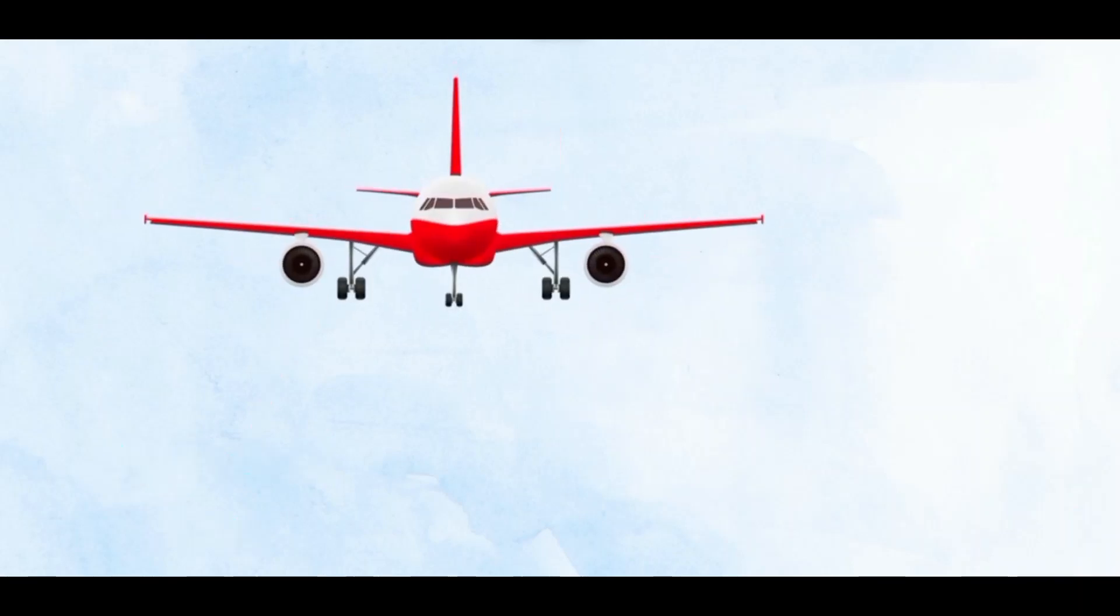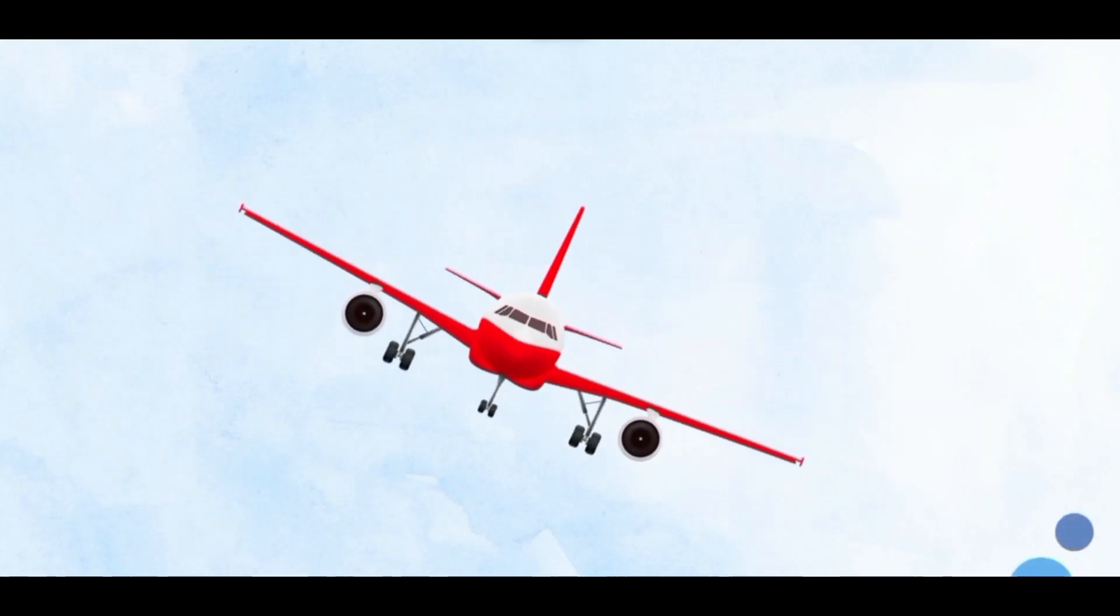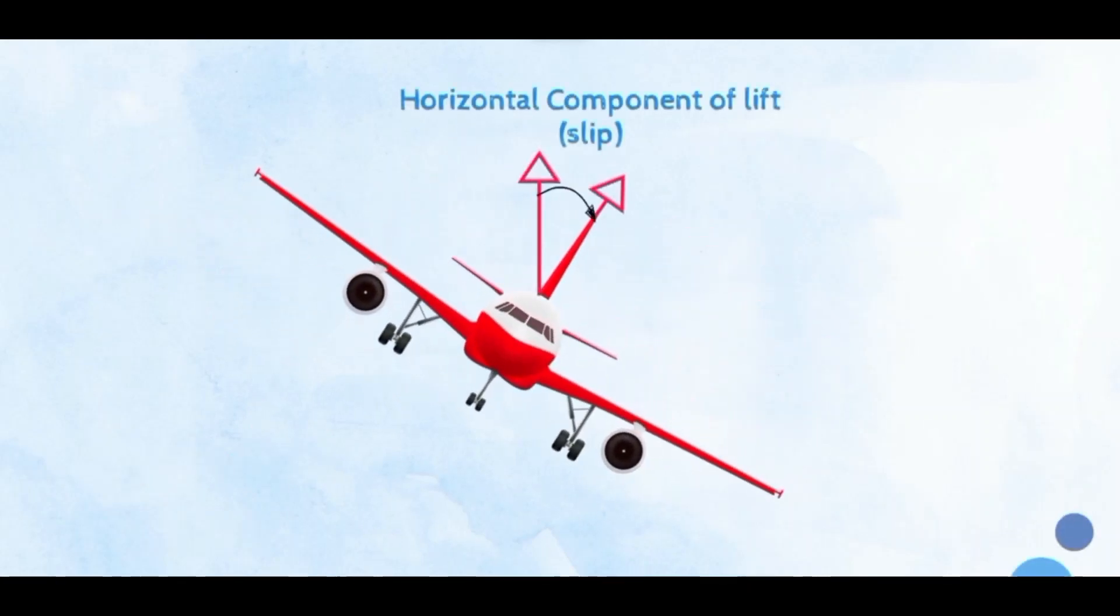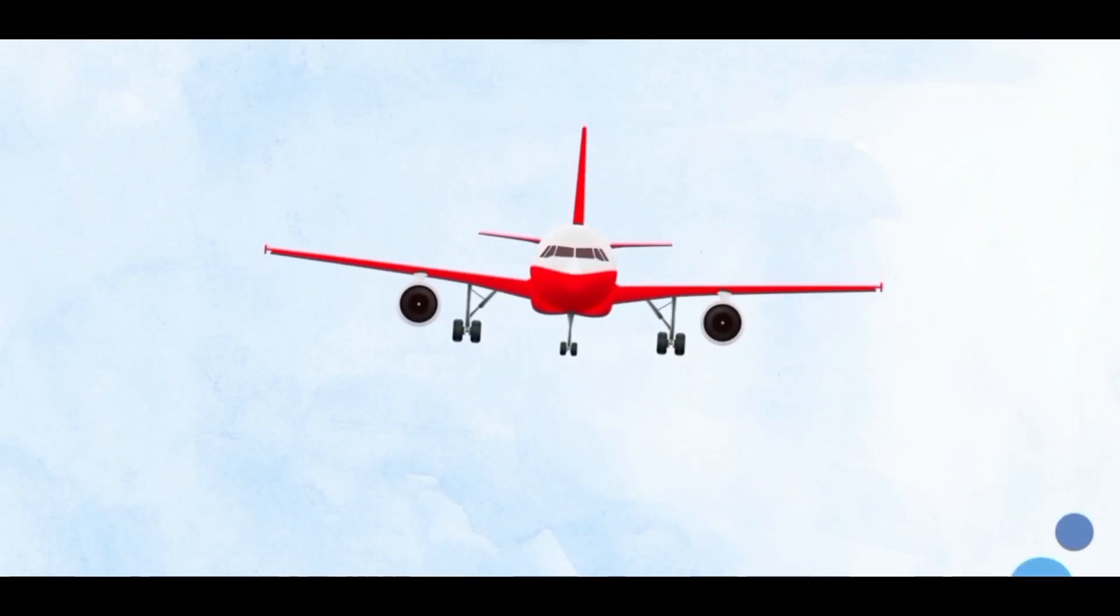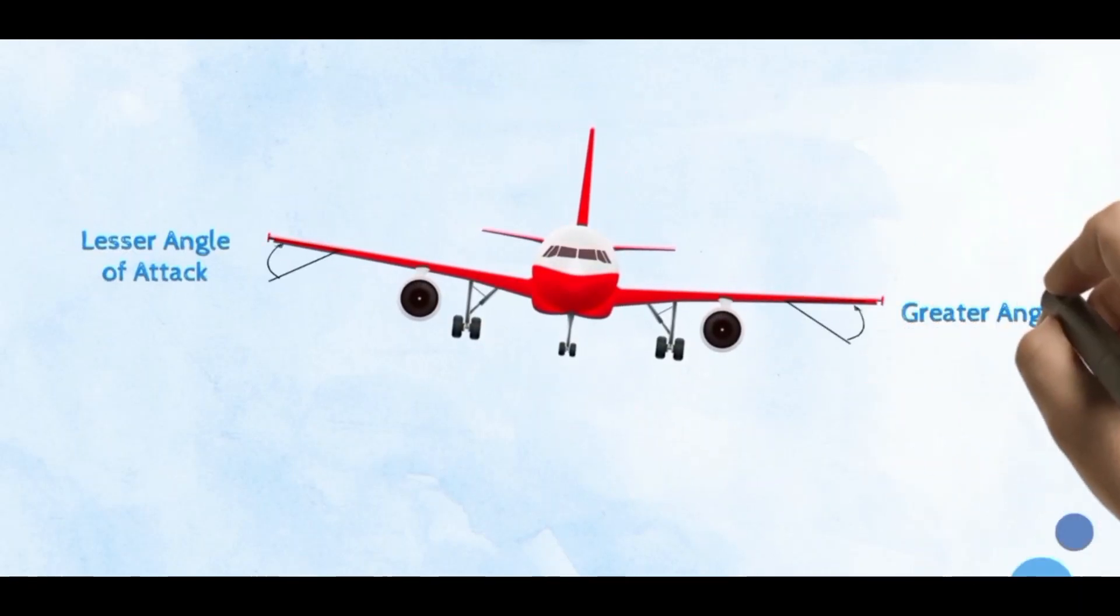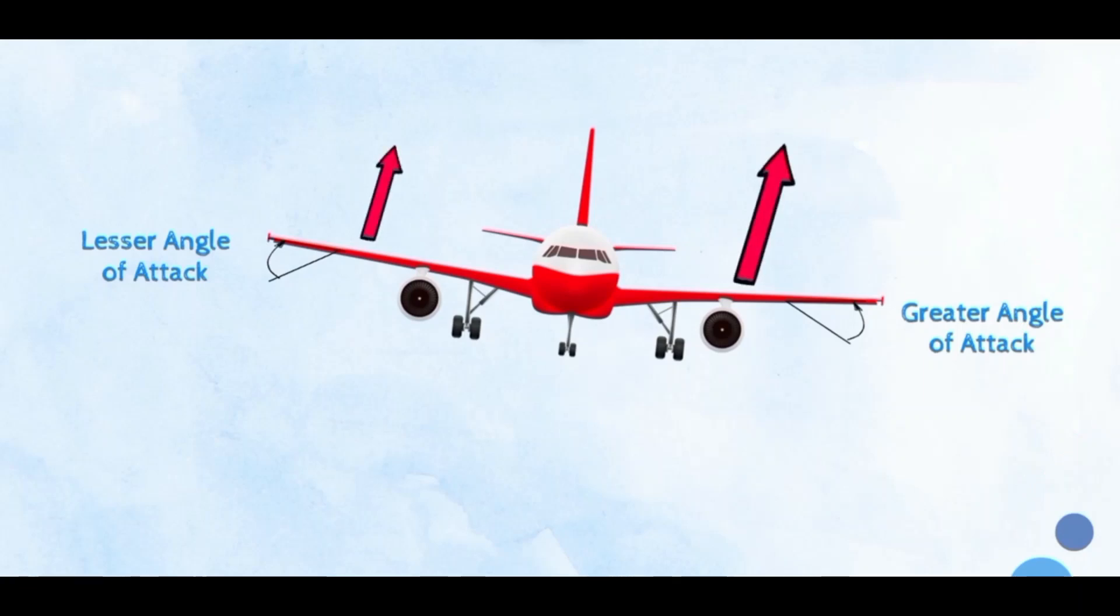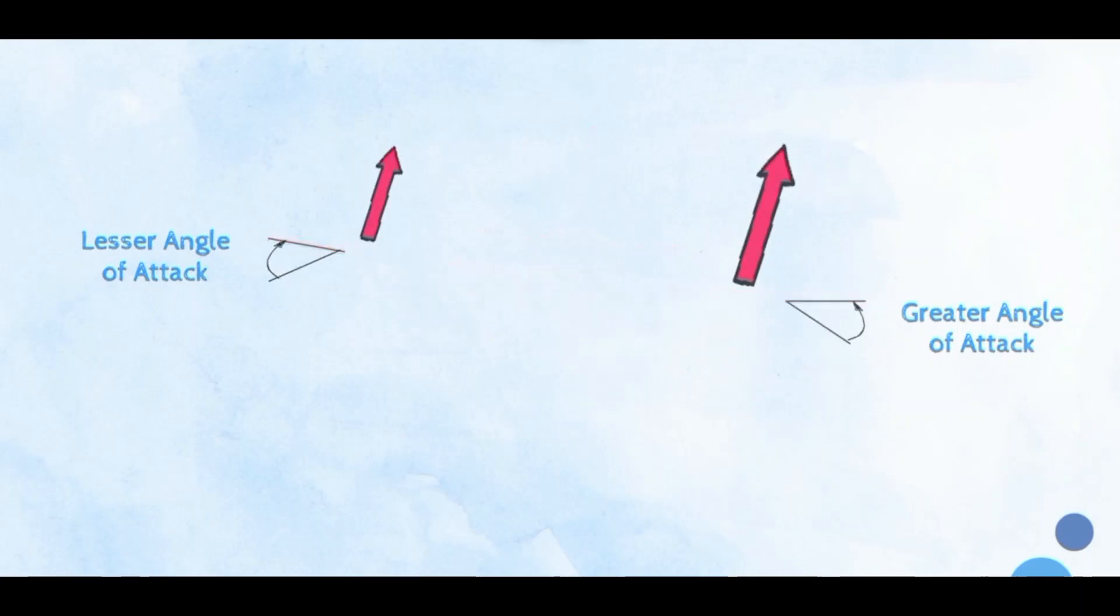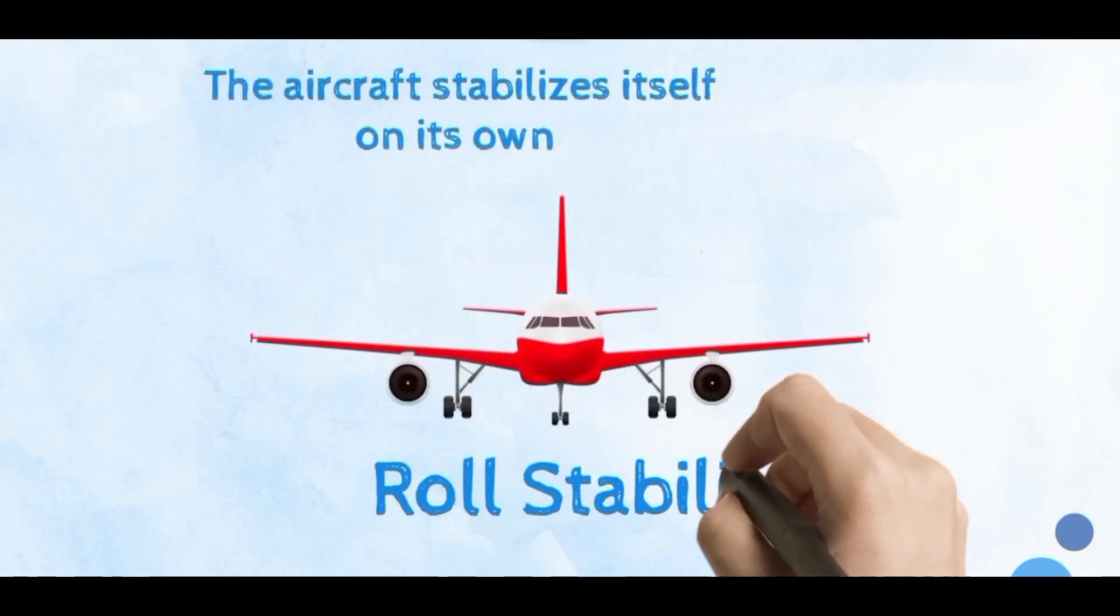But even a tilted wing produces the same amount of lift in a different direction. The actual reason is the difference in angle of attack as observed by the two wings which leads to difference in lift generated by wings. This difference in lift force will automatically cause the aircraft to stabilize itself on its own, thus causing roll stability.